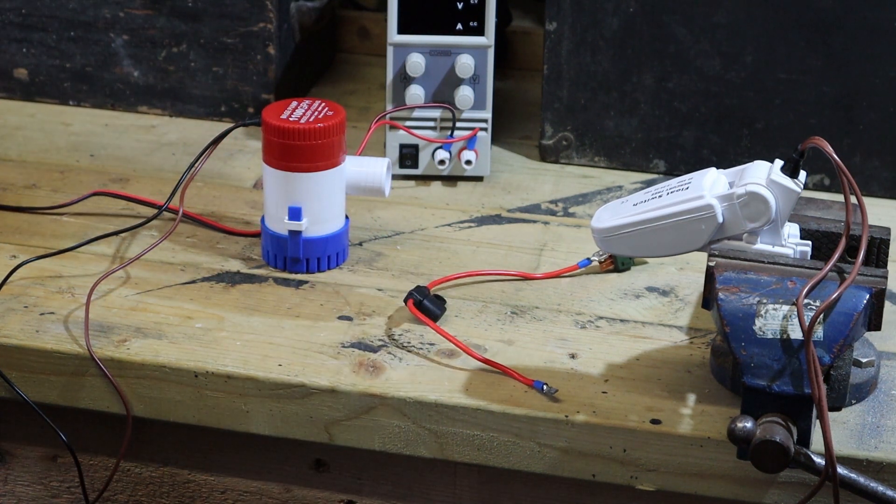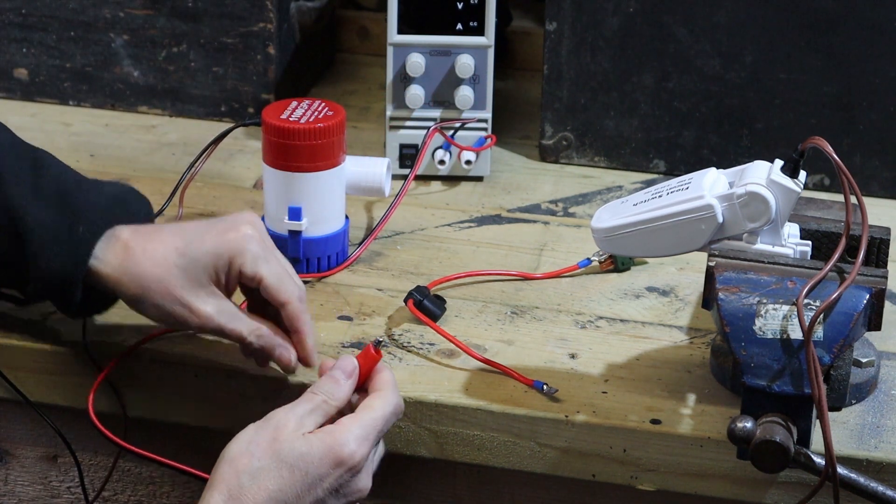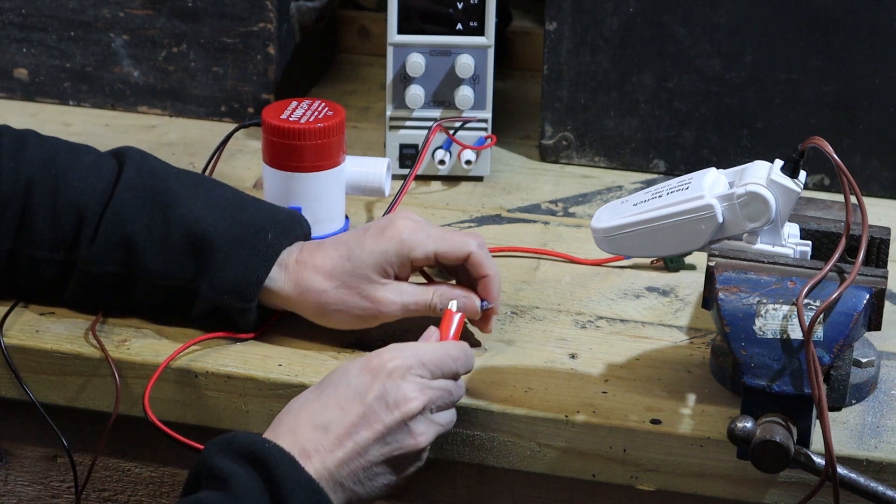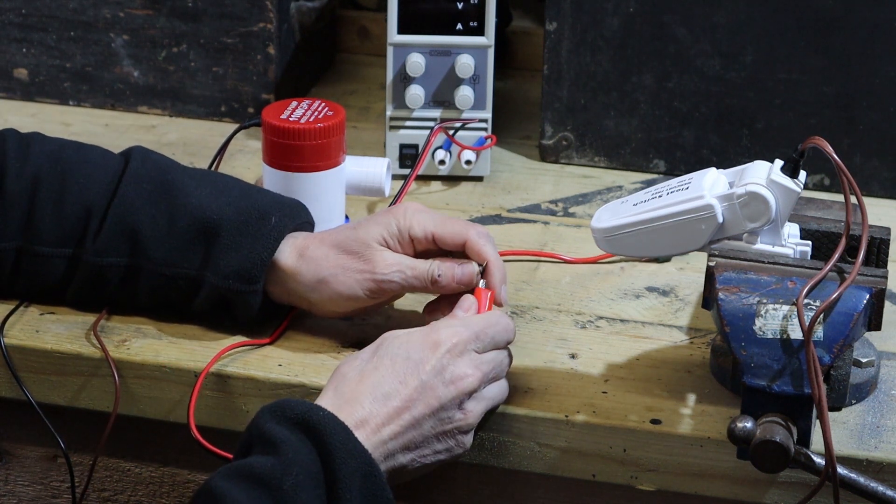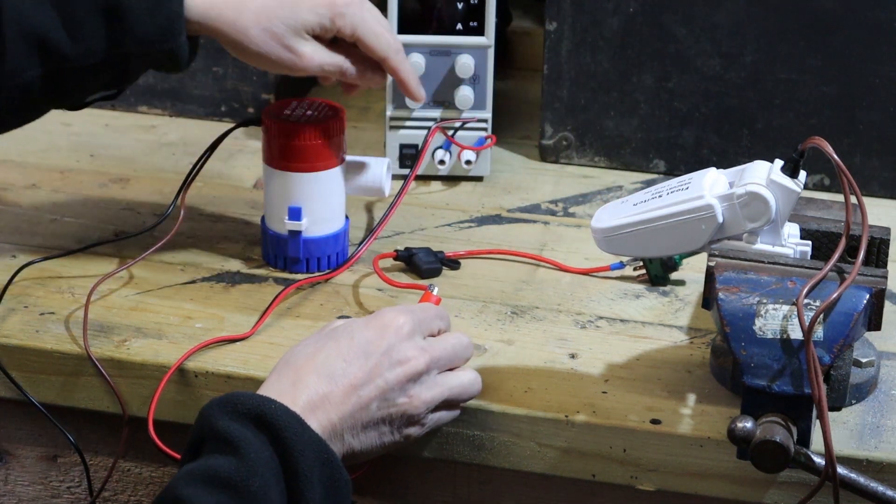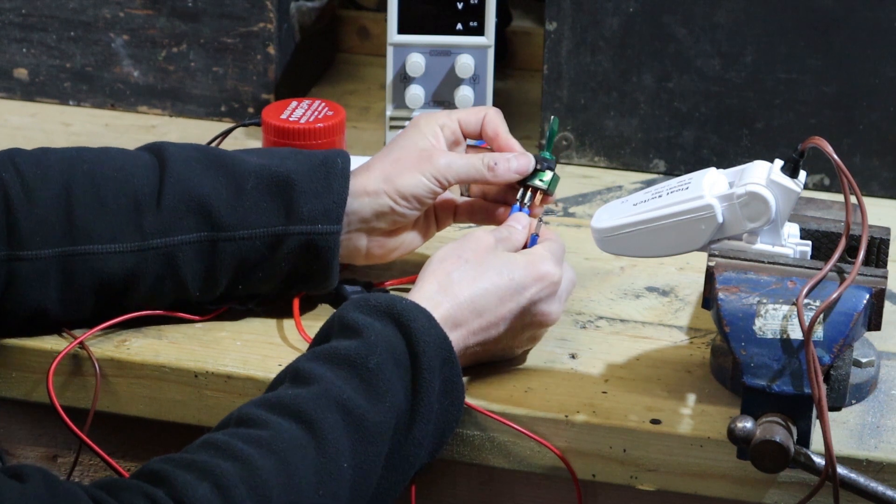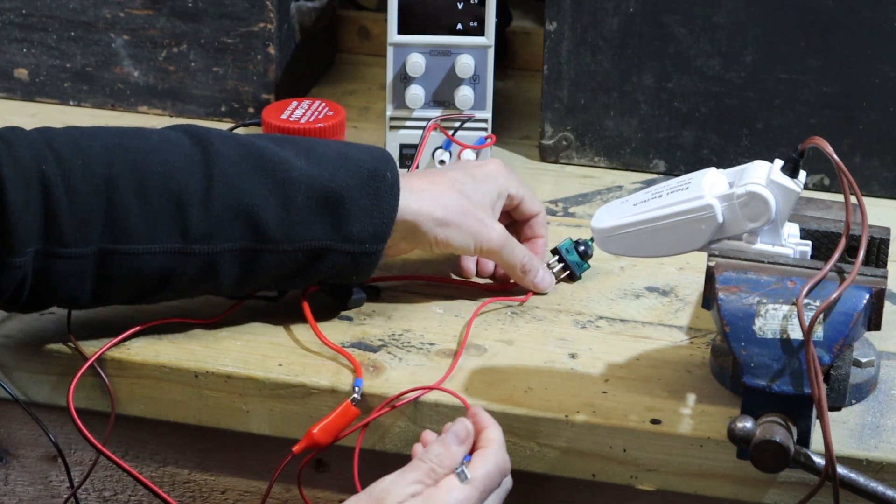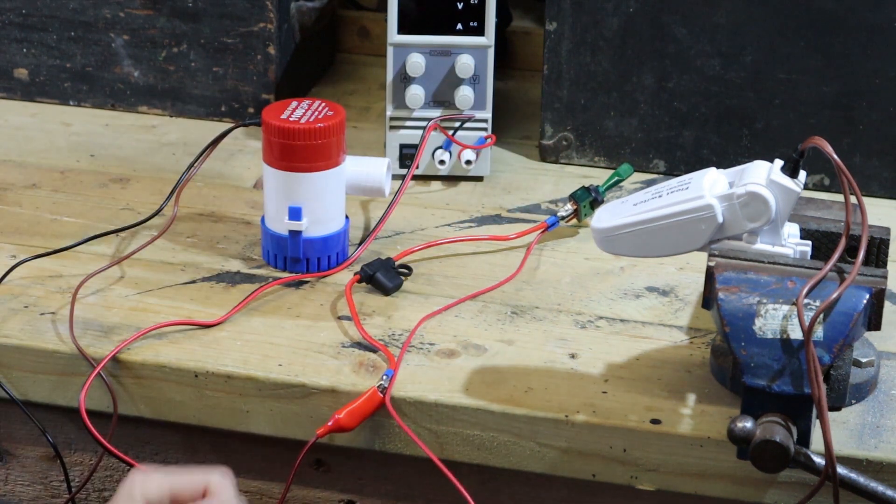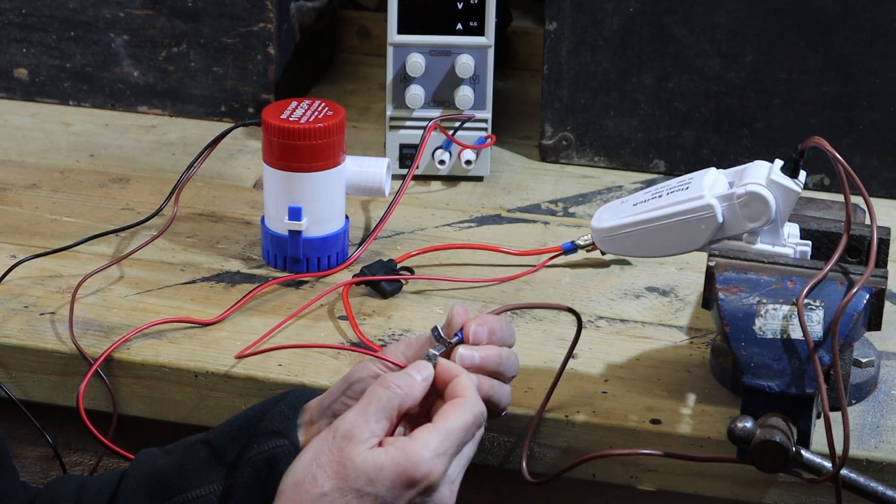So what we're going to do is start with the positive side. The positive feed is going to go to the inline fuse and through the toggle switch. From the toggle switch we're going to take the feed through to one of the wires from the float switch, it doesn't matter which.